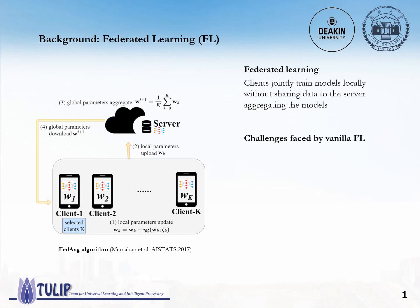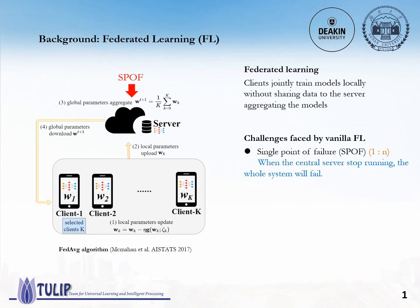When we look at the whole process of vanilla FL, we can see that it faces some challenges. First of all, its network architecture is one-to-many, meaning that when a central server stops running, the whole system will fail. This is called a single point of failure. Also, we can find that there is no incentive mechanism for vanilla FL. It assumes that clients voluntarily participate in the learning process. However, in the real world, many clients, especially those holding large amounts of data, may leave this system because they have no rewards.